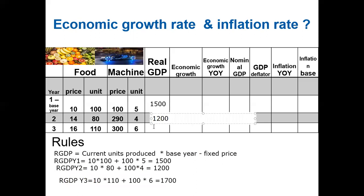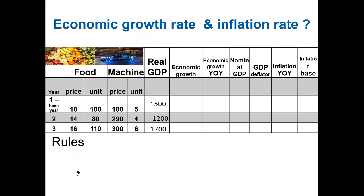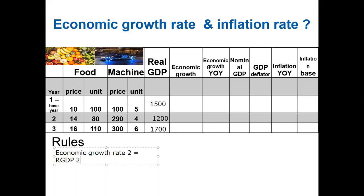To calculate economic growth, we use a simple formula. Economic growth rate equals real GDP of the new year minus real GDP of the previous (or base) year, divided by the base year real GDP, all times 100. For year one, the growth rate is not available since there is no prior year to compare with.